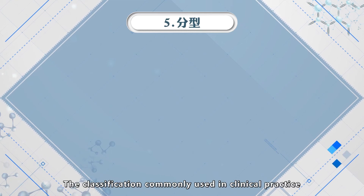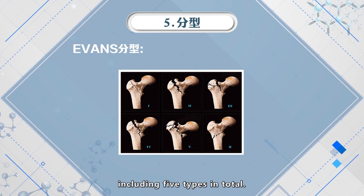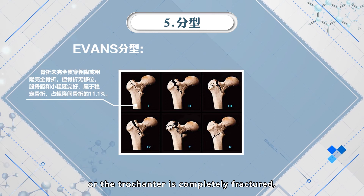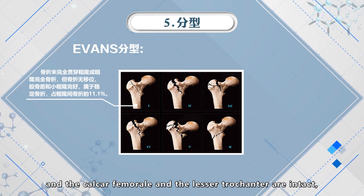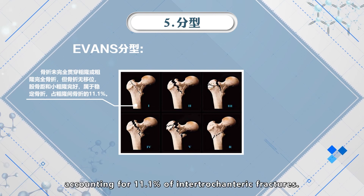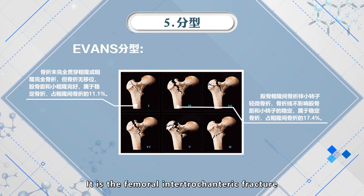The classification commonly used in clinical practice for intertrochanteric fractures is called the Evans advanced classification, including five types in total. Type 1: the fracture does not completely cross the trochanter, or the trochanter is completely fractured but not displaced, and the causal femoral and lesser trochanter are intact. This is a stable fracture, accounting for 11.1 percent of intertrochanteric fractures.